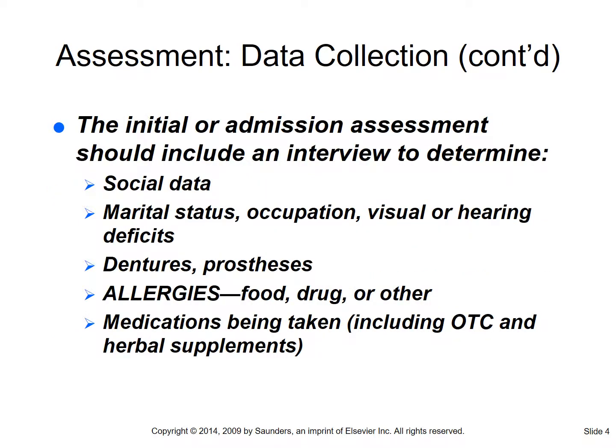For the admission assessment we need to know social data: marital status, occupation, any type of sensory deficits, dentures, prosthetics, hearing aids. Allergies are a big one - don't forget your allergies. Also any medications they've been taking - that's over-the-counter, herbs, and prescribed meds.